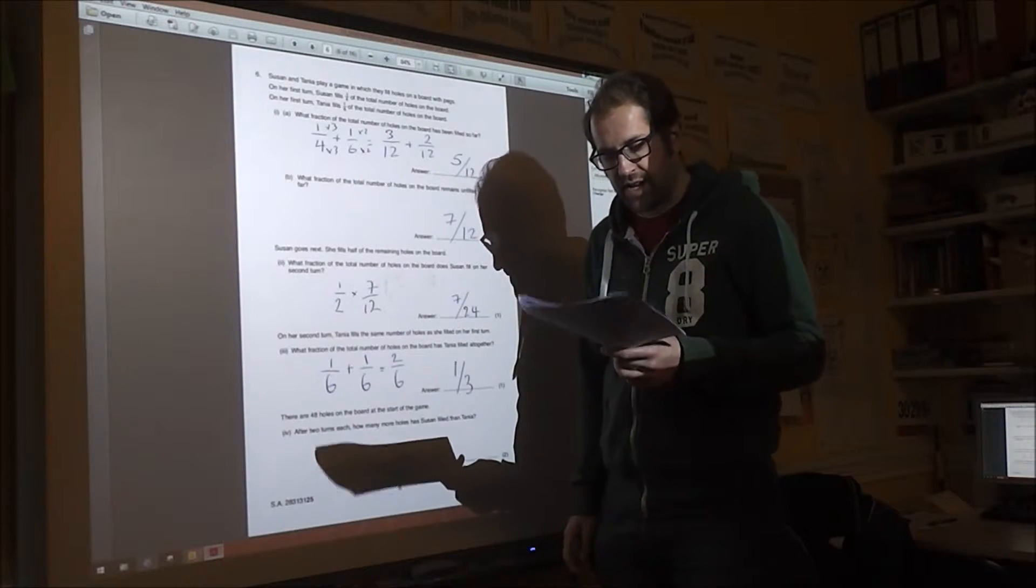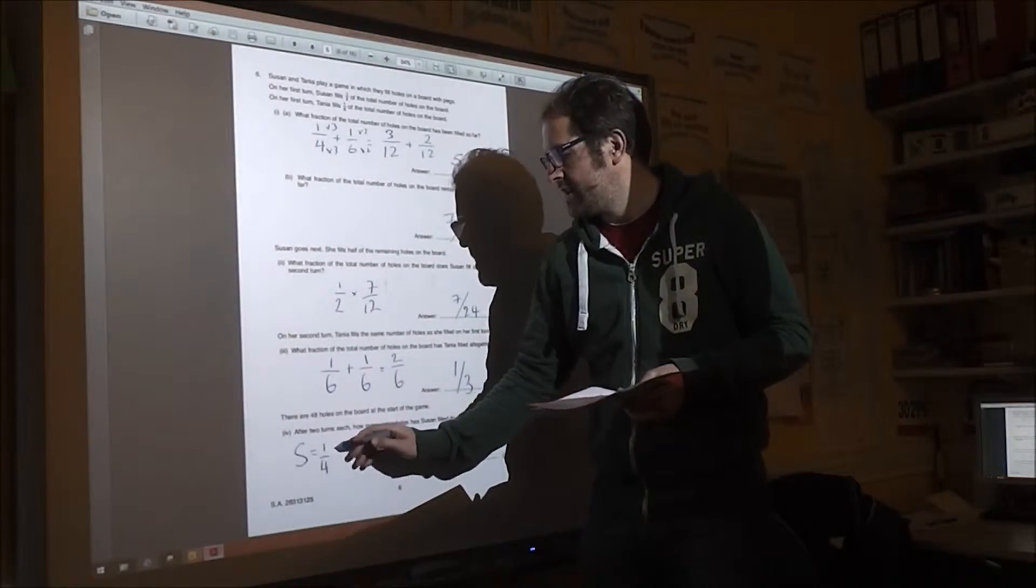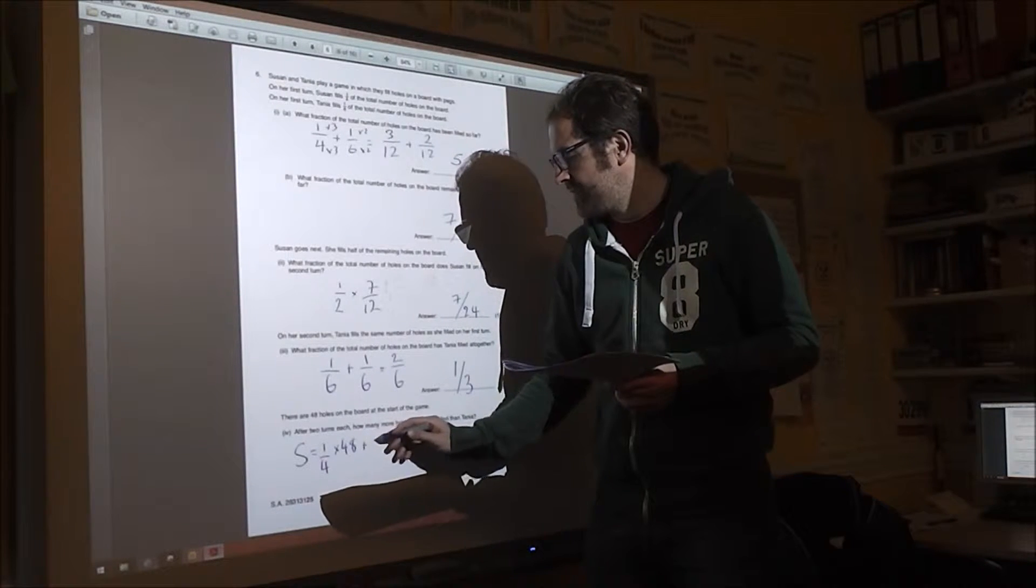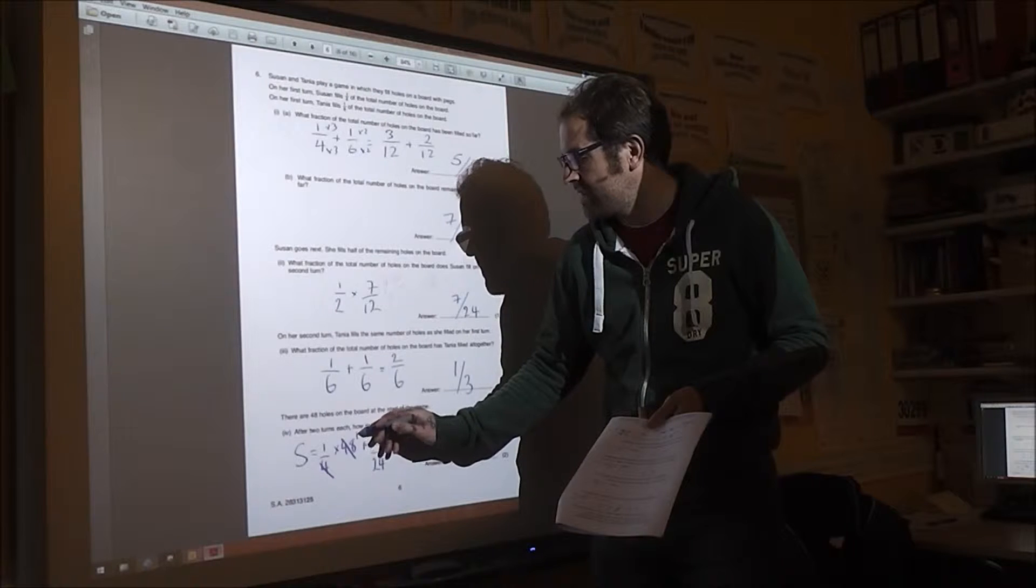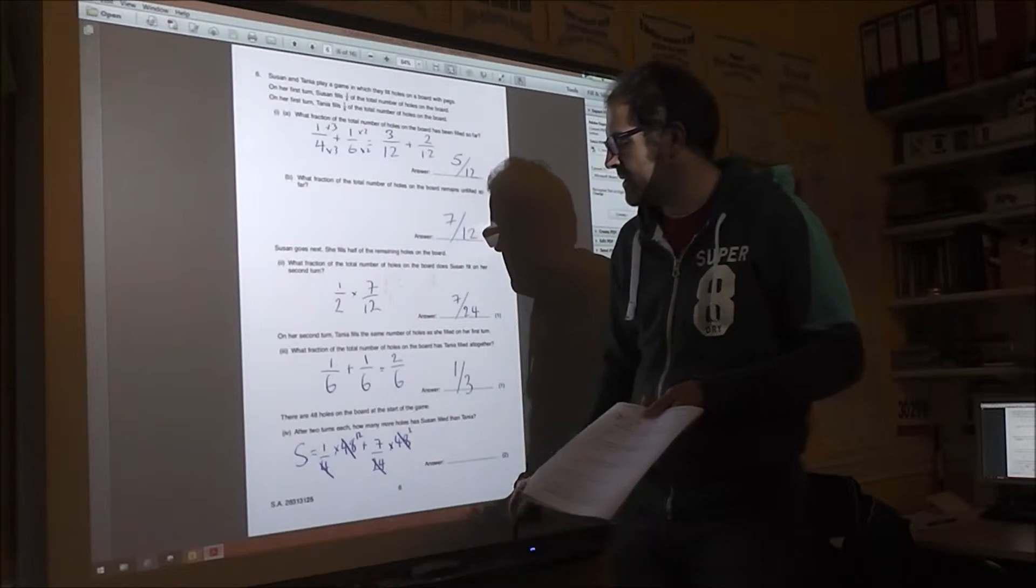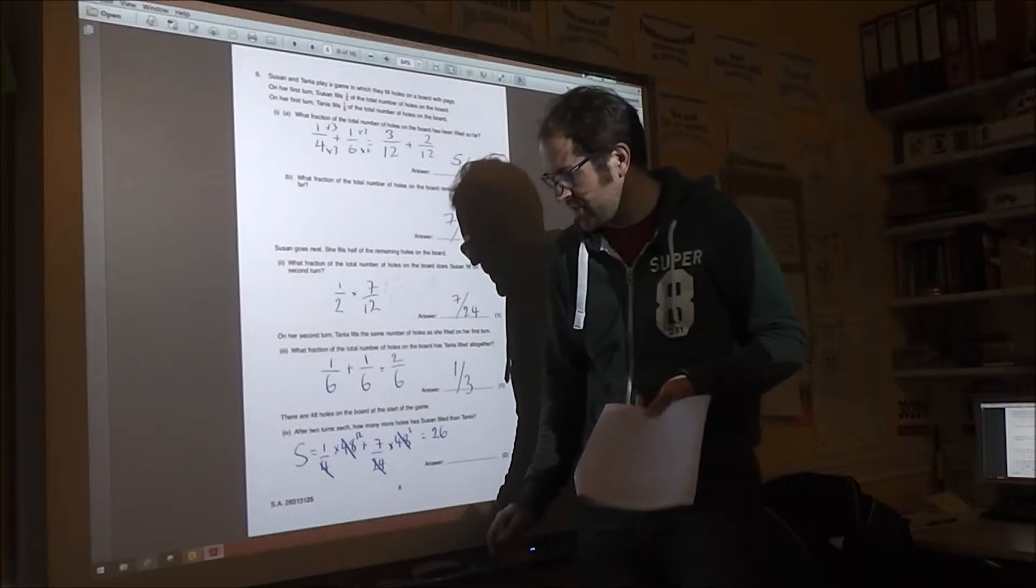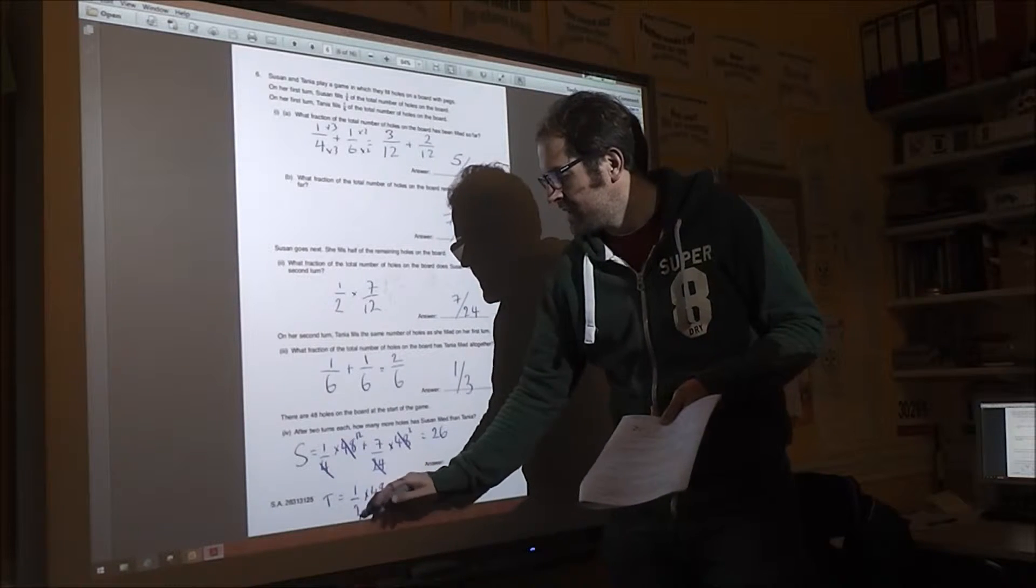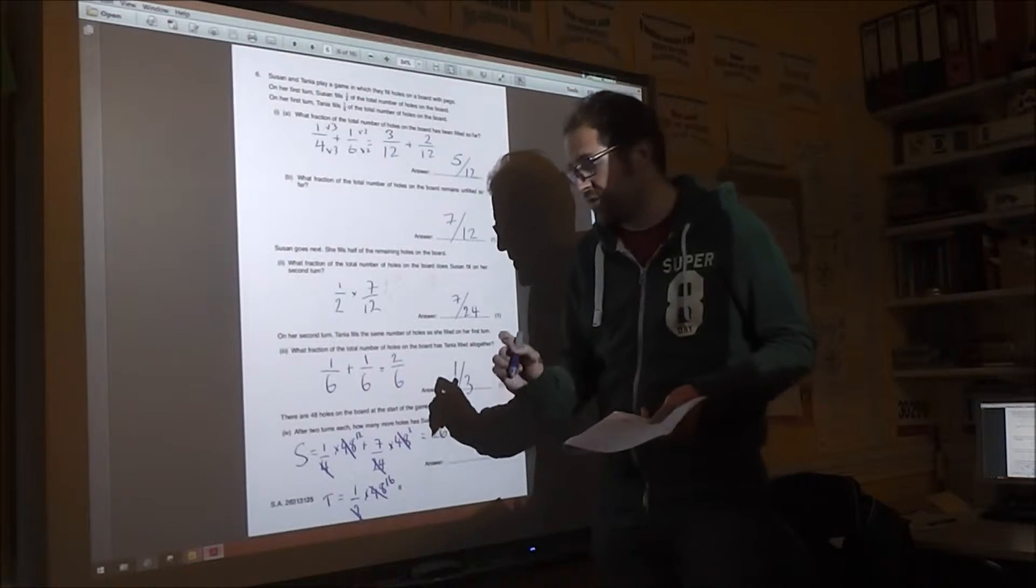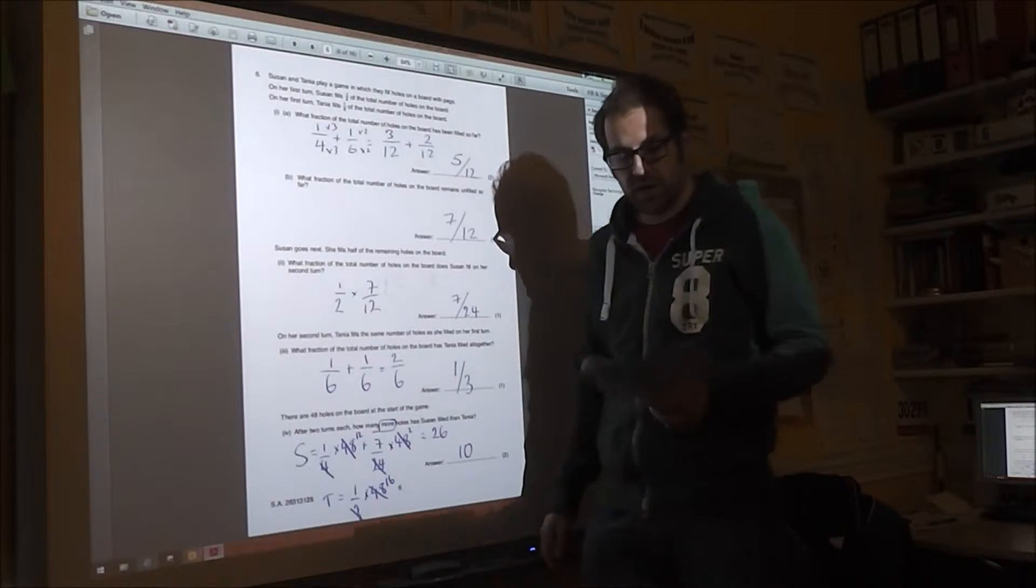Tanya does one sixth on her first go. And she does another sixth on her second go. Which means she's done two sixths, which simplifies to one third. Now the final bit, we need quite a bit of calculations for this. Let's start with Susan. So Susan did a quarter of the whole thing, and then 7/12ths of the whole thing. So cross-cancel here and here, that's 12. There and there, that's 2 and 1. So we've got 12 plus 14, which is 26 wholes in total. And then Tanya does a third of the whole thing. And a third of 48 is 16. So read the question very carefully, because it asks you how many more. And then she's done 10 more than Tanya.